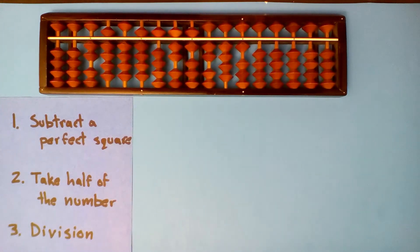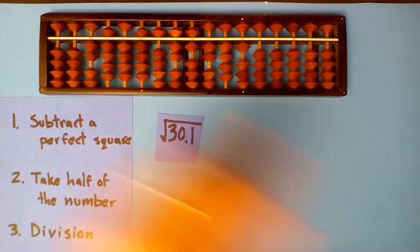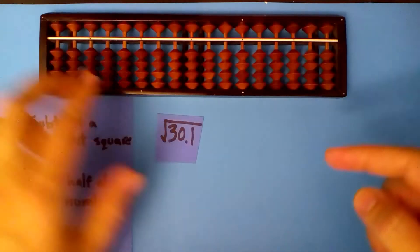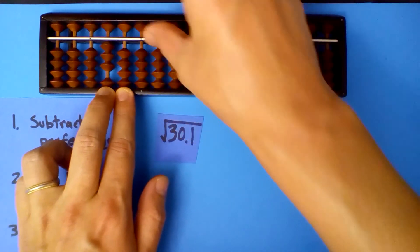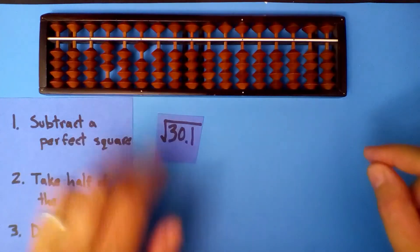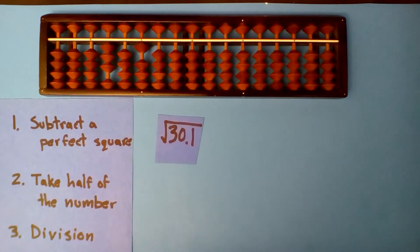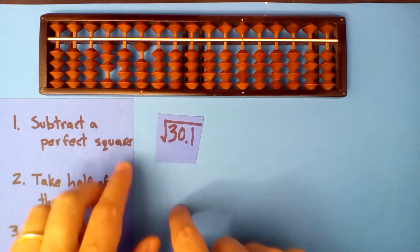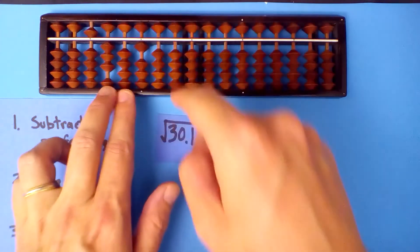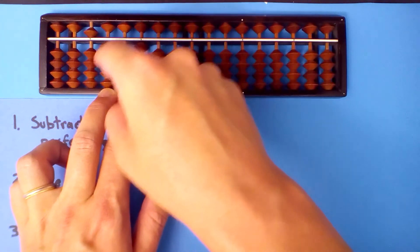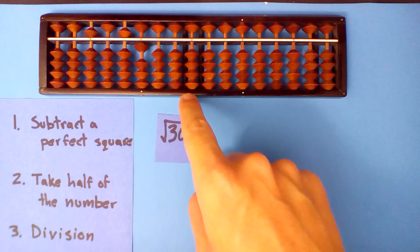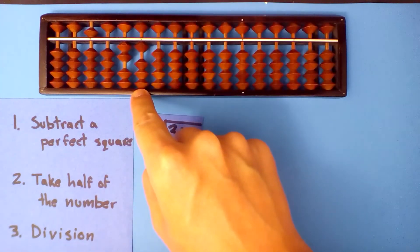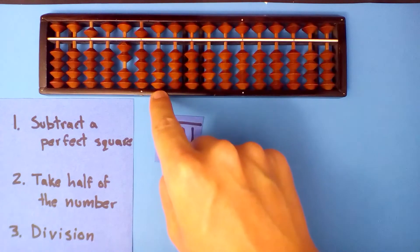What's the square root of 30.1? Set up the 30 here and the 0.1. We'll subtract a perfect square — 5. 5 times 5 is 25, subtract 25. Take half of what's left: half of 5 is 2, half of 11 is 5, half of 10 is 5.